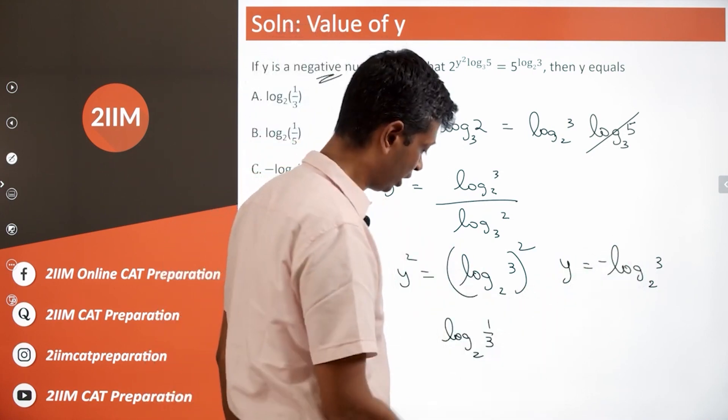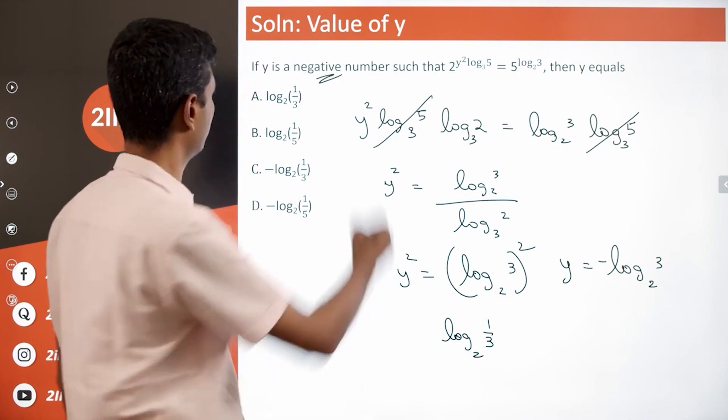Minus log 3 to the base 2 is nothing but log 1 by 3 to the base 2. We are looking for a choice that says that.